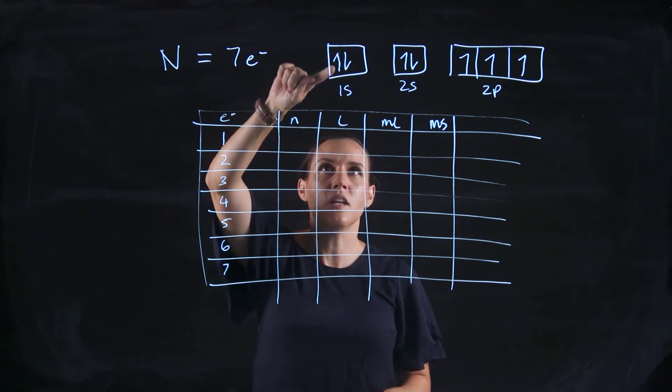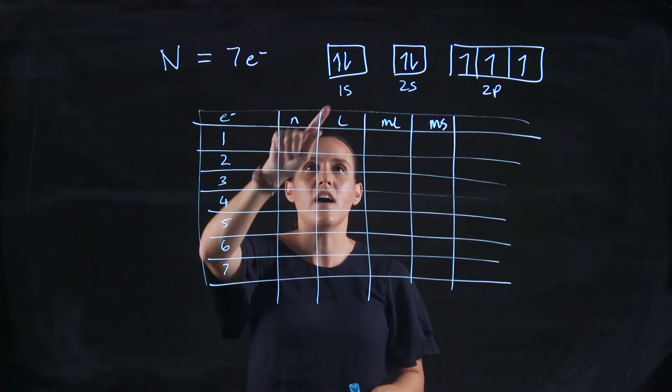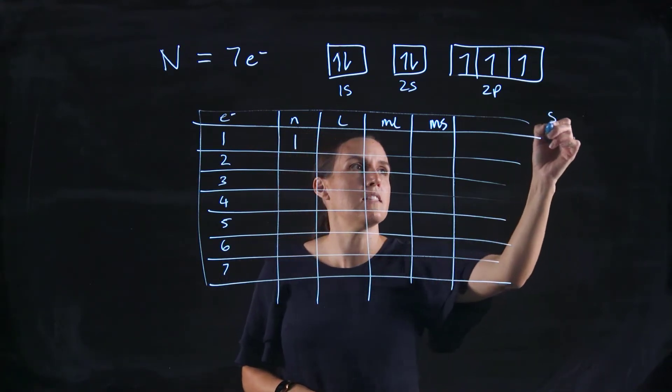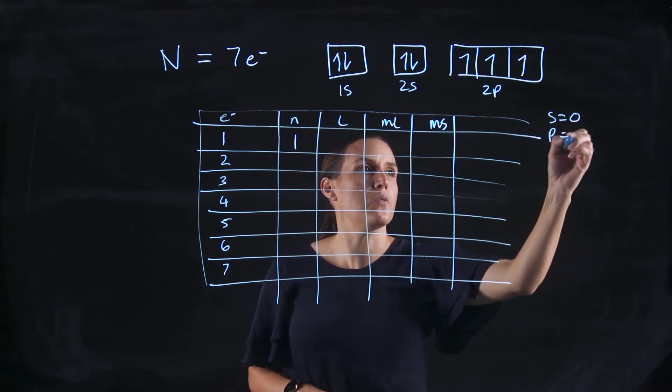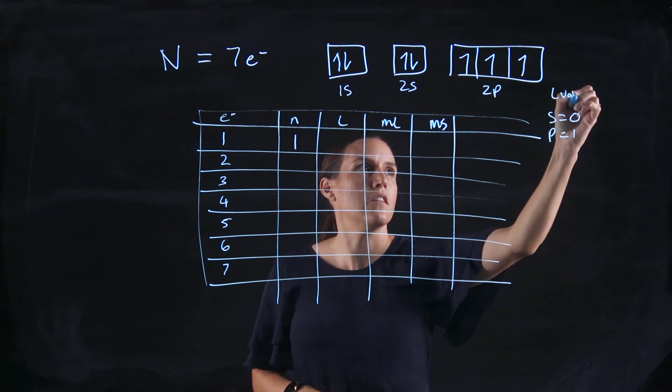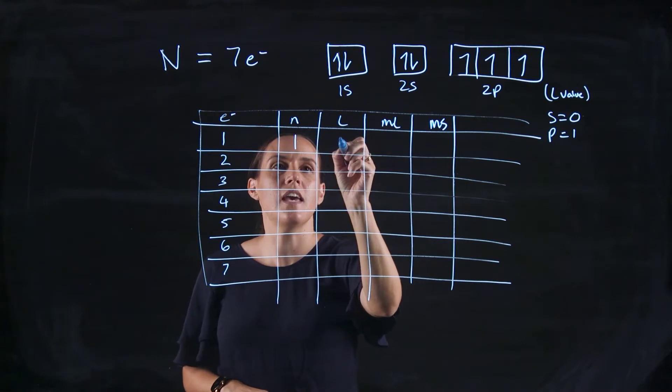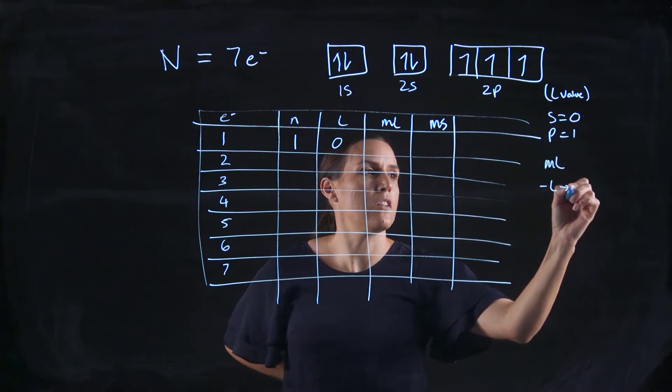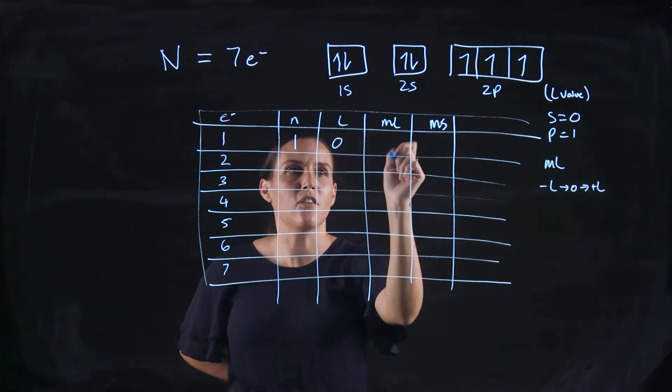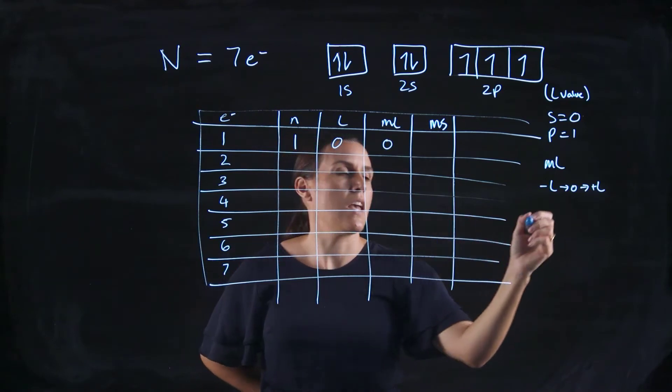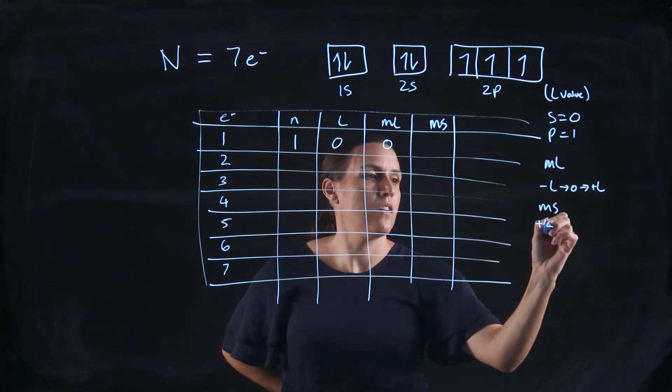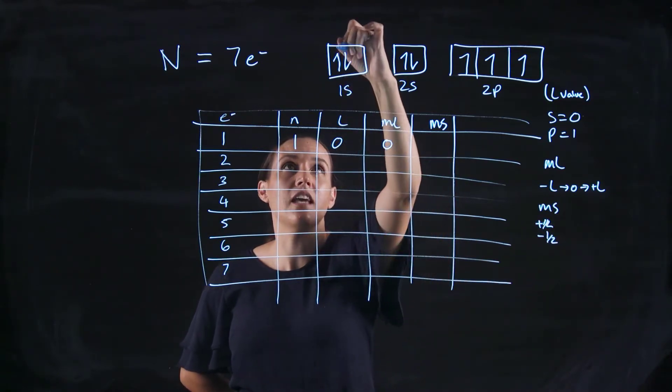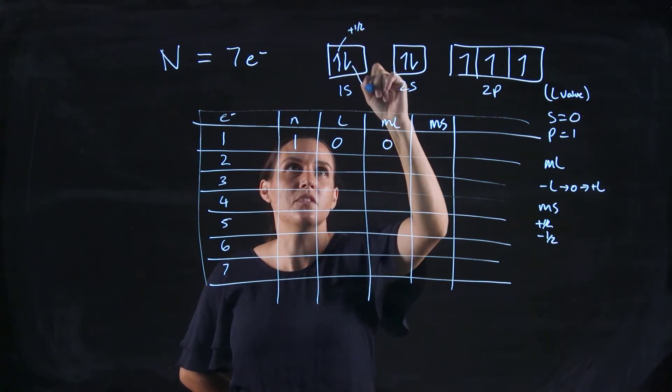So here is my first one. Let's say it's the upwards arrow. The n value is 1 because it's the 1s. Our l value, remember s equals 0, p equals 1. This is s orbital, so it's 0. The ml is minus l through 0 to plus l. So if l is 0, it's going to be 0. My ms is either plus 1 half or minus 1 half. Let's say that the upwards are plus 1 half and the downwards are minus 1 half.